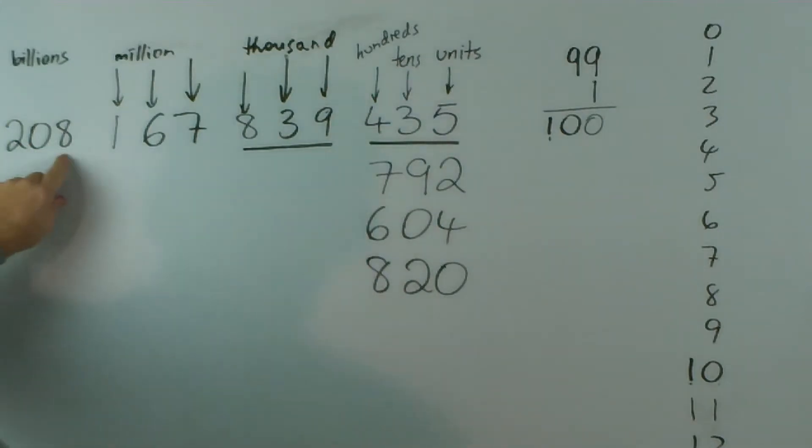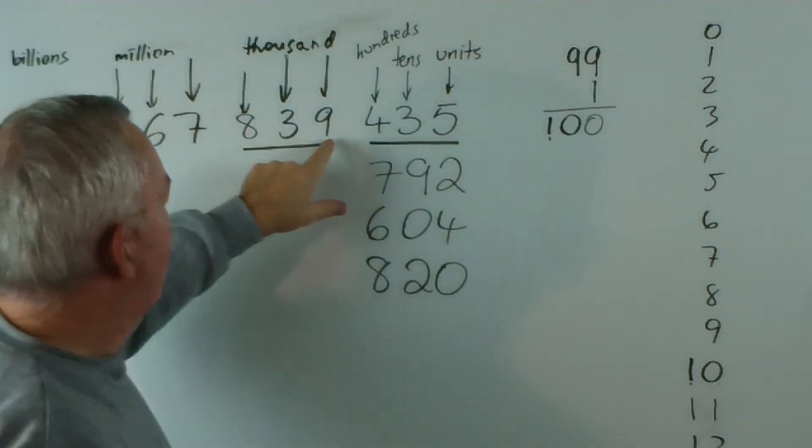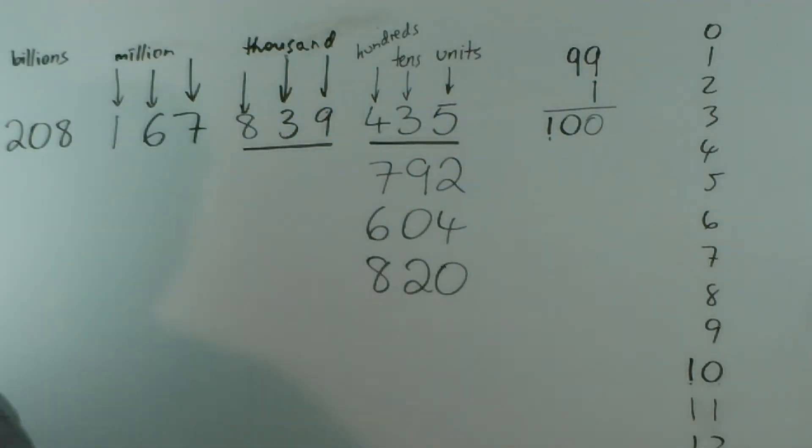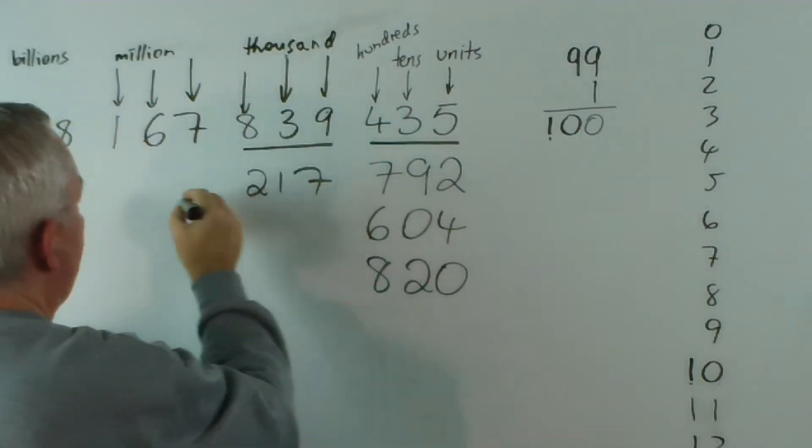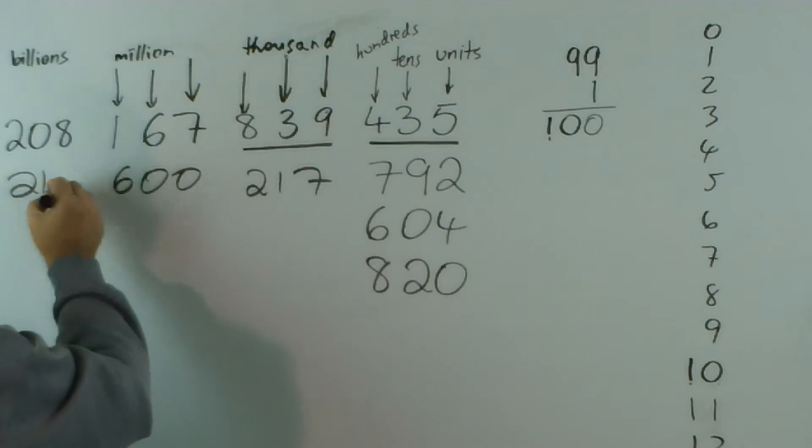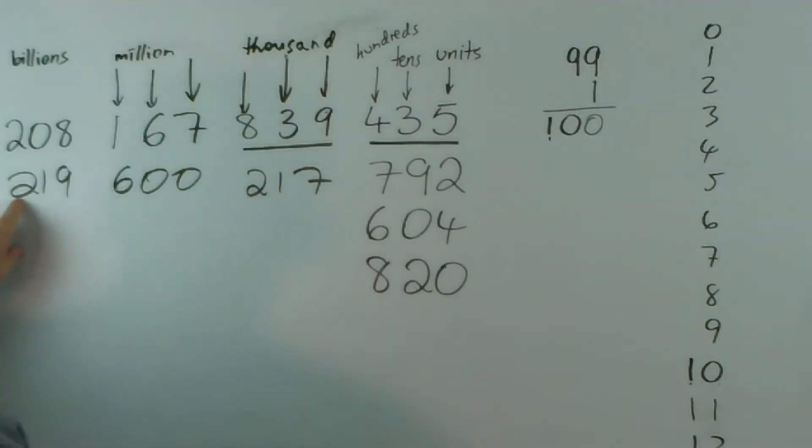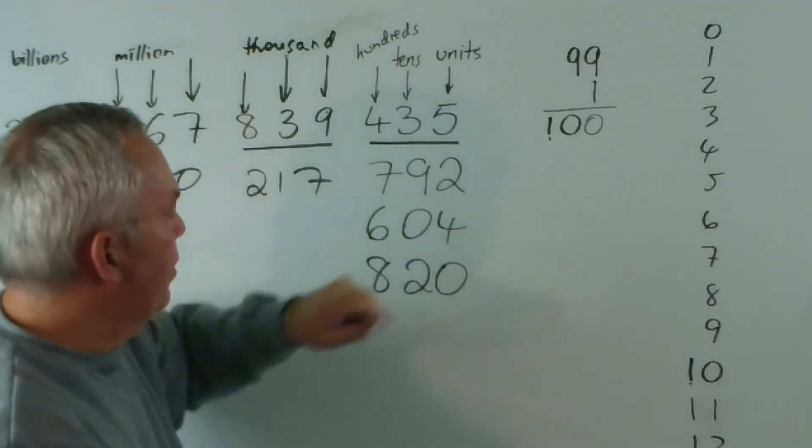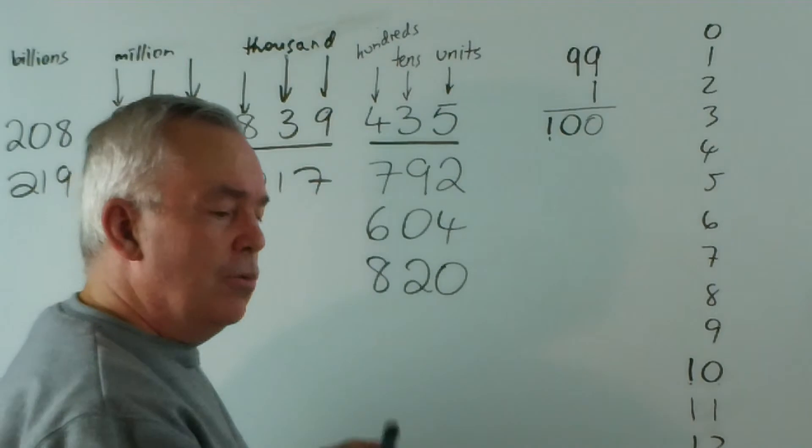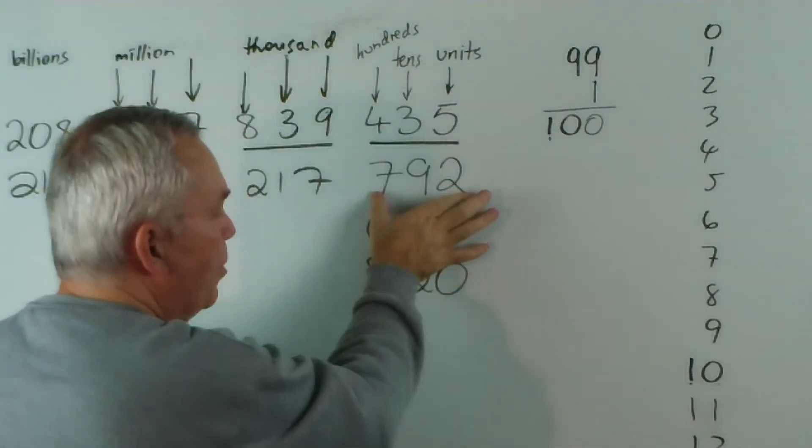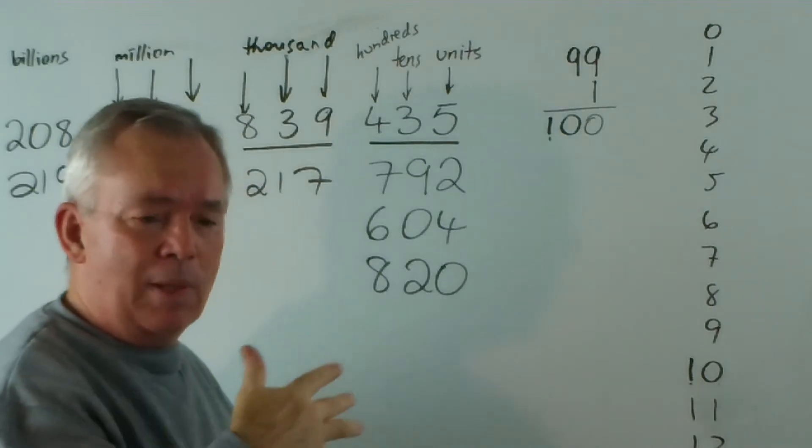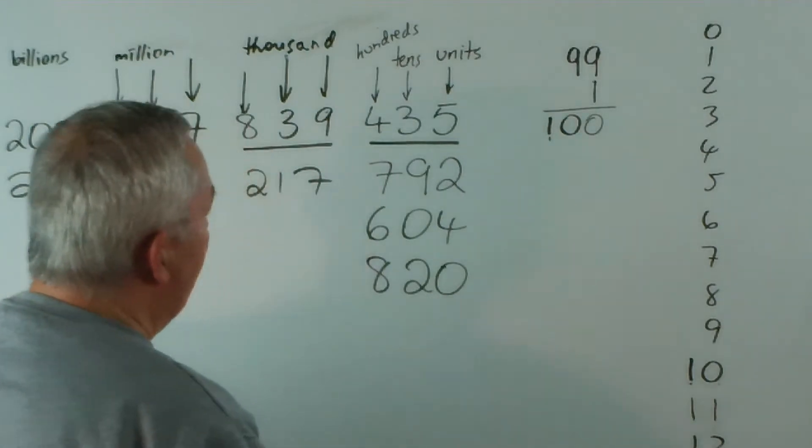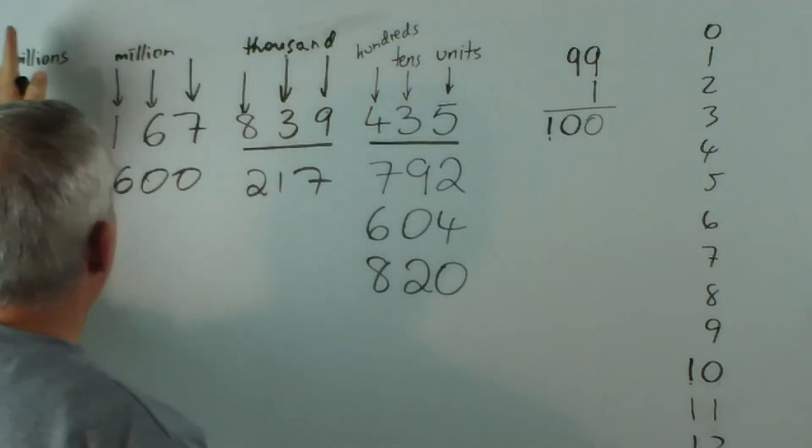So all you've got to learn from here on is what we call each bundle. This would read 208,167,839,435. And that's how we read large numbers. If I write these down, this would be 219,600,217,792. So to read large numbers, you only have to be able to read three at a time. In other words, you have to be able to read up to the hundreds. And most students have mastered that. And then you have to know that the columns go thousand, million, billion.